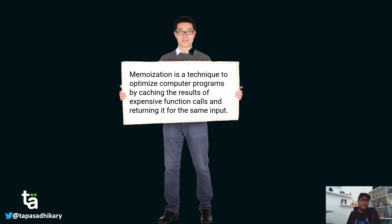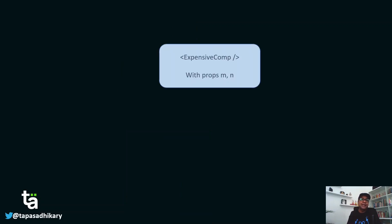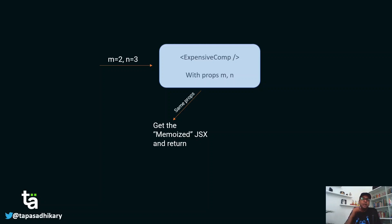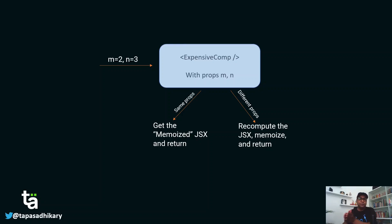We will take this same paradigm for React. In the beginning of this series we understood that functional components in React are nothing but plain JavaScript functions, and the props we pass are like arguments. So an expensive React component with props m and n follows the same philosophy — as long as the props have the same value, you can cache the output, which in this case is the JSX. If the props change, you recompute and store the new output.